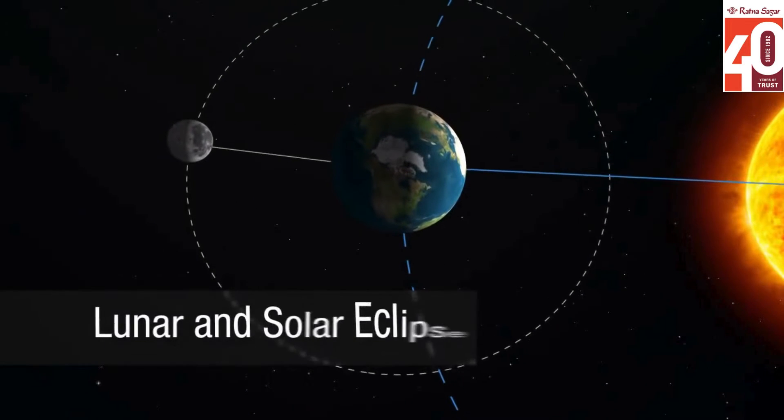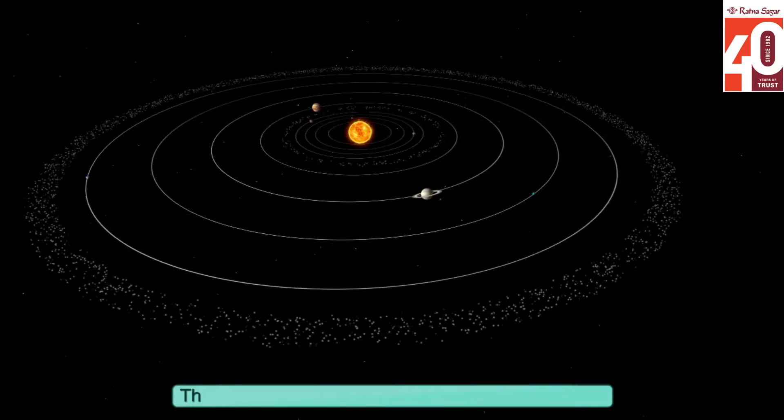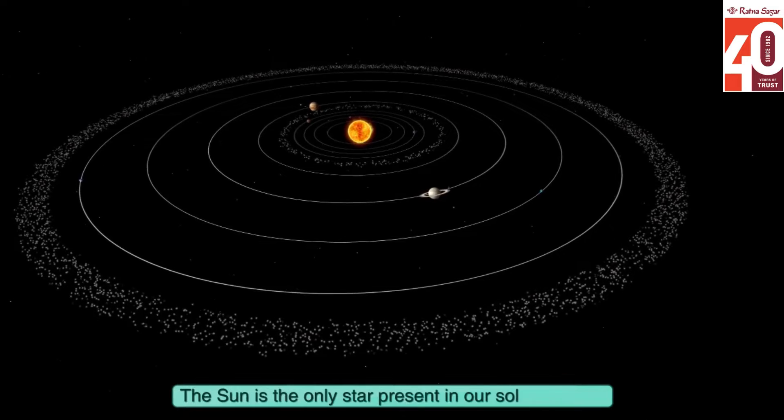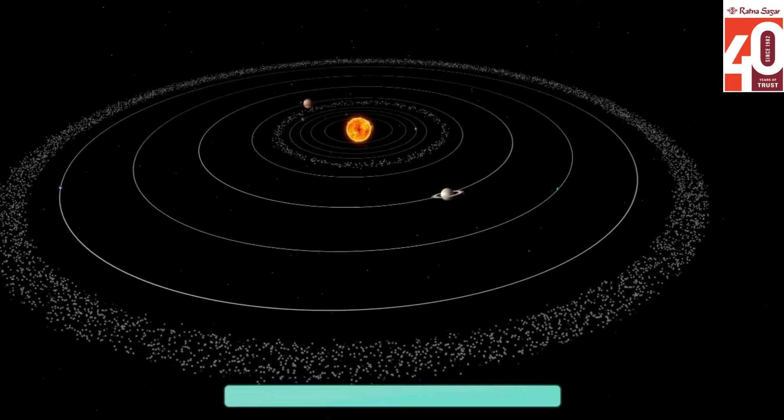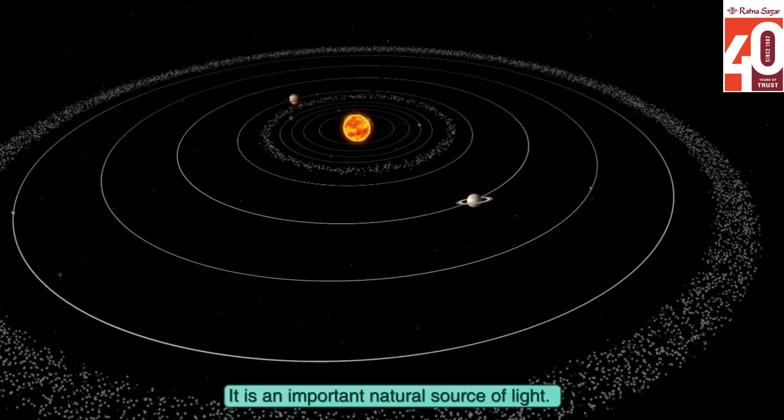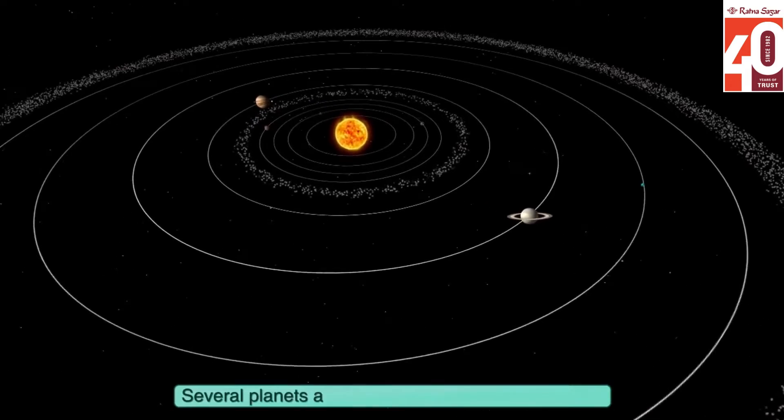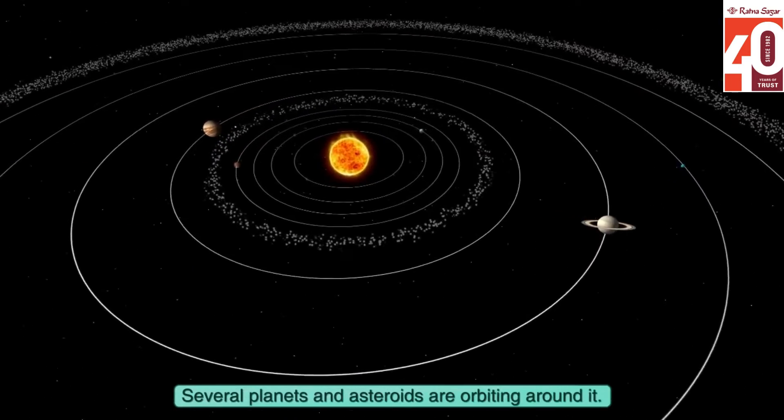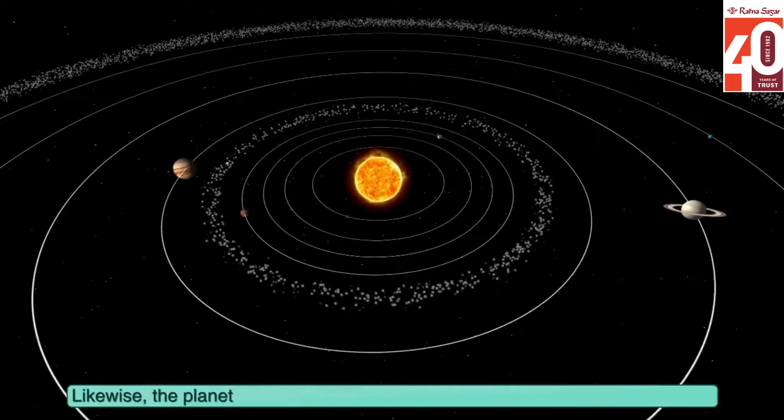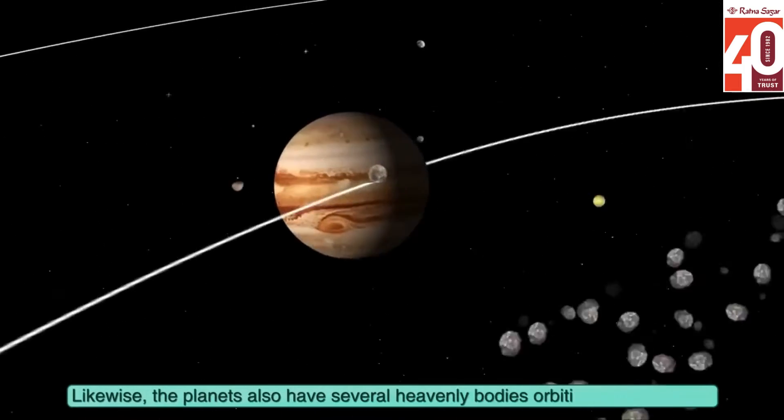Lunar and solar eclipse. The sun is the only star present in our solar system. It is an important natural source of light. Several planets and asteroids are orbiting around it. Likewise, the planets also have several heavenly bodies orbiting around them.